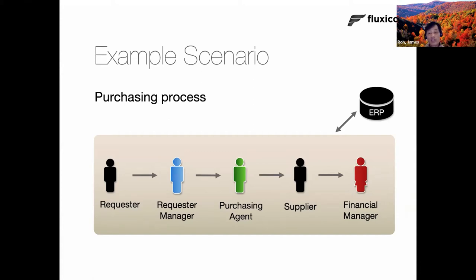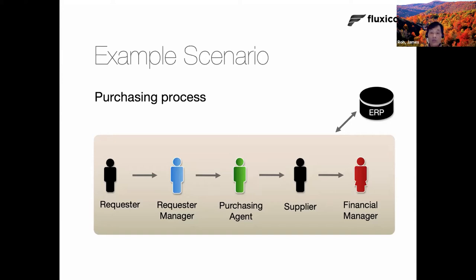Suppliers go for bidding and you choose the winner. The supplier then makes a payment request that goes to the financial manager, and this data is stored in an ERP system. The overall five-step process: requester approaches request manager, request manager sends it to purchasing agent, purchasing agent looks for suppliers, suppliers make a payment request.